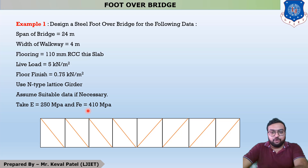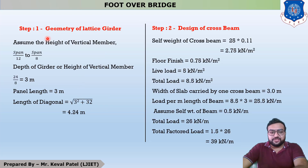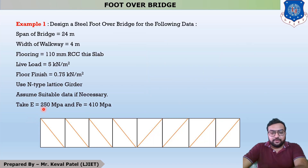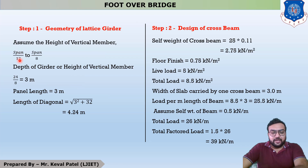Now we move to Step 1: Geometry of the lattice girder, where we determine the dimensions of the foot over bridge by trial and error. First, assume the height of the vertical member. The height of the vertical member should remain in the range of L/12 to L/8. In this example, the span is 24 meters, so the range is 24/12 to 24/8, which gives 2 to 3 meters.